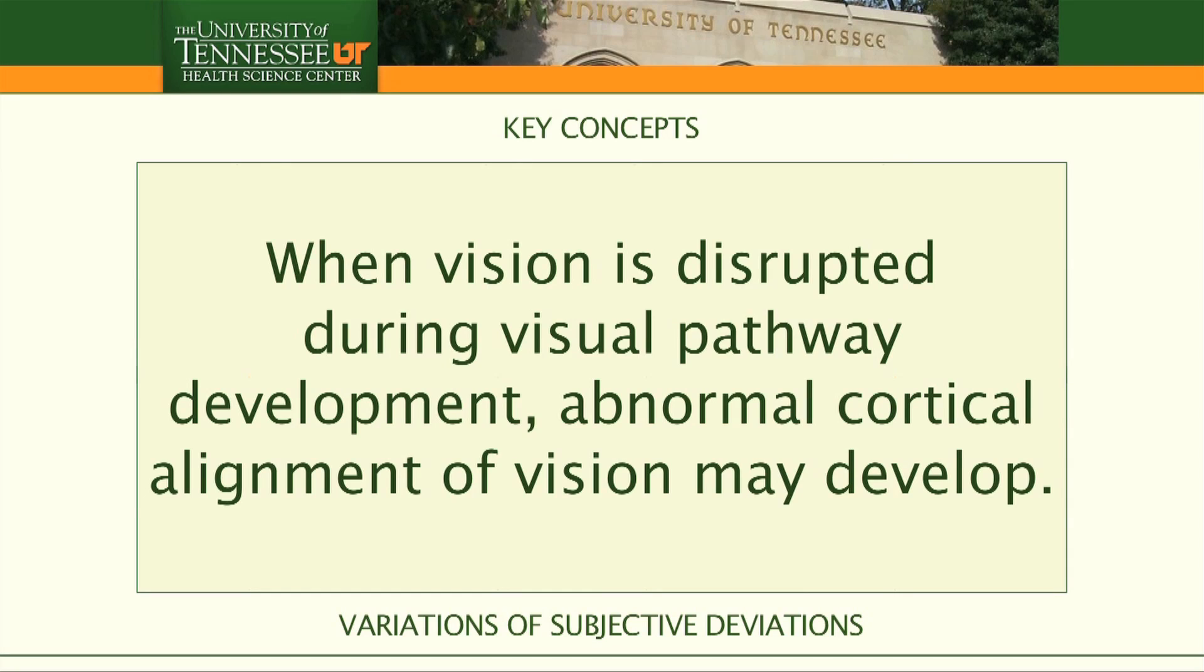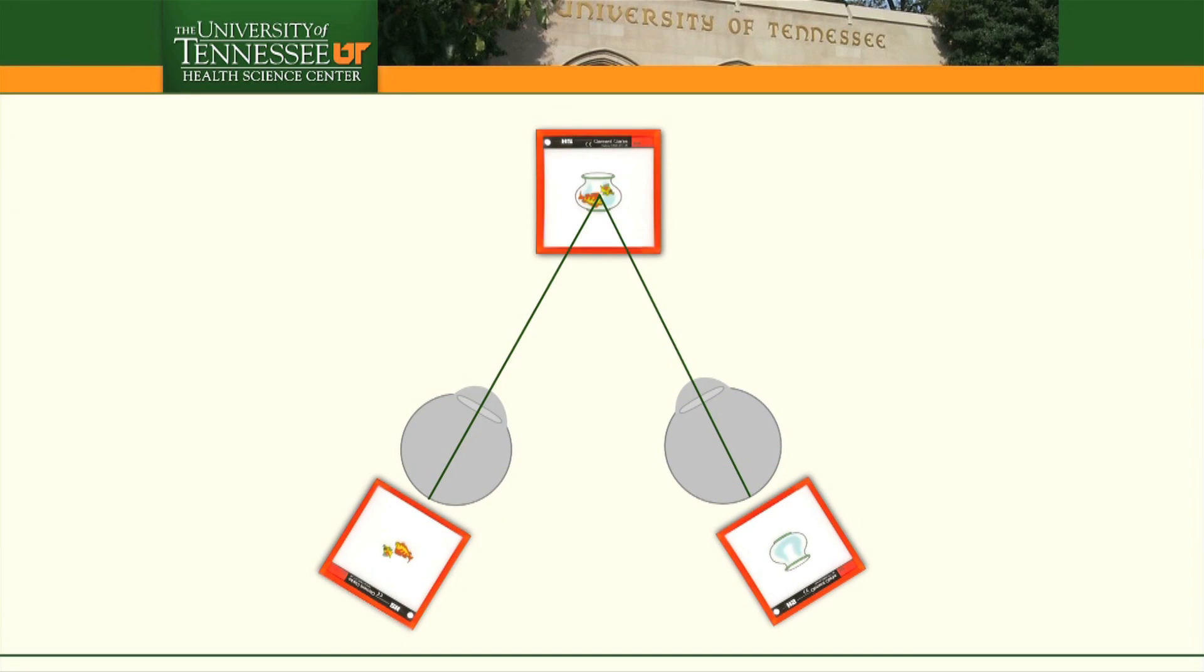When vision is disrupted during visual pathway development, abnormal cortical alignment of vision may develop. For instance, if one eye is turned outward, the image will land on temporal retina instead of the macula. The location of this is called the contralateral image point.